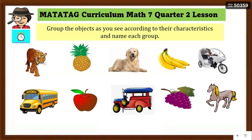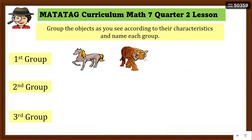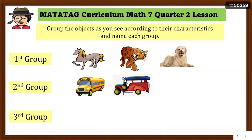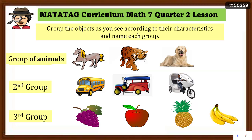Let's activate your prior knowledge. Group the objects shown on screen according to their characteristics or katangian, and name each group. There are three groups: Group 1 has the horse, lion, and dog; Group 2 has the school bus, jeepney, and motorbike; and Group 3 has grapes, apple, pineapple, and banana. Based on their characteristics, these are a group of animals, group of vehicles, and group of fruits.